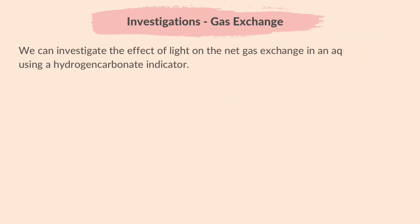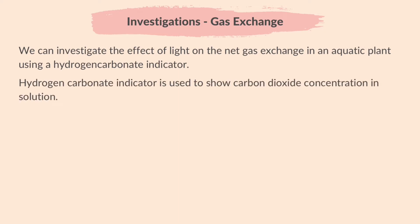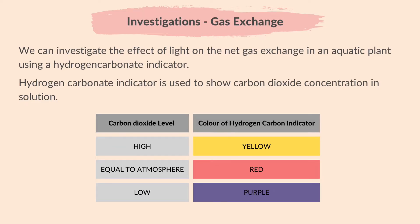We can investigate the effect of light on the net gas exchange in an aquatic plant using a hydrogen carbonate indicator. A hydrogen carbonate indicator is used to show carbon dioxide concentration in solution. The table shows the colors that the indicator turns at different levels of carbon dioxide concentration: it turns yellow in high concentrations of carbon dioxide, red when in equilibrium with carbon dioxide in the atmosphere, and purple in low concentrations of carbon dioxide.